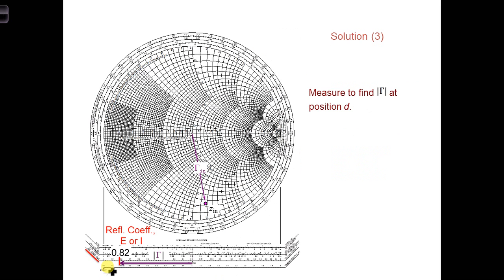Then we can get the magnitude of the reflection coefficient by using the radial scale at the bottom of the Smith chart. So that hasn't changed from what we had before, it's still 0.82.